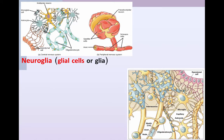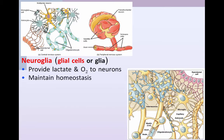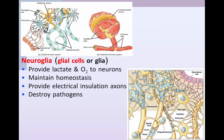The glial cells are somewhat diverse and have a variety of functions, including providing lactate and O2 to neurons. Neurons will then aerobically break down that lactate to get the ATP they need for their biological work. Neuroglia also help to maintain homeostasis, and they provide electrical insulation to axons — myelinated axons being the insulation we're talking about here.